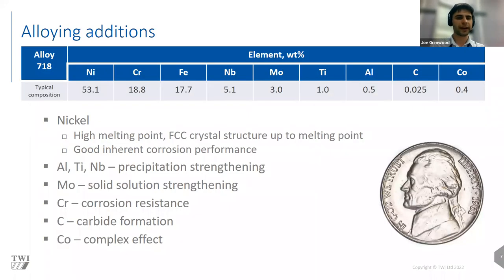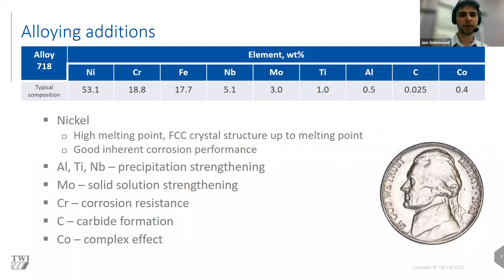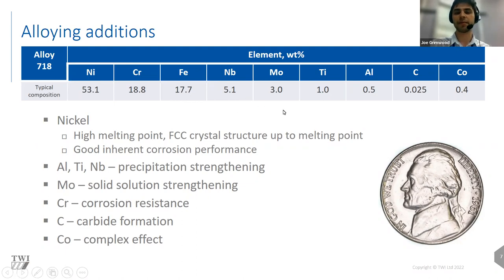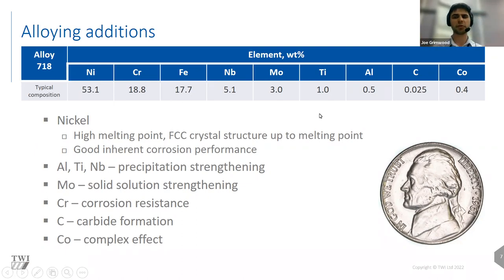To quickly summarize the elemental breakdown of Alloy 718: it's mainly based on nickel, but also has quite significant amounts of chromium, iron, then niobium and titanium, and then small amounts of aluminium, some carbon, some cobalt, and also other trace elements.